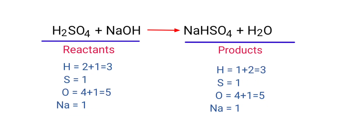If you observe this equation, the number of atoms at the reactants side are the same as the number of atoms at the products side. There are 3 hydrogen atoms, 1 sulfur atom, 5 oxygen atoms, and 1 sodium atom on both sides. So we don't need to balance this equation because this equation is already balanced.